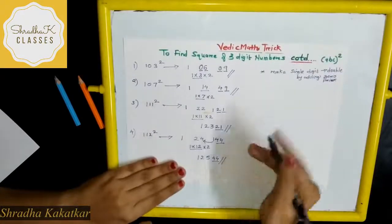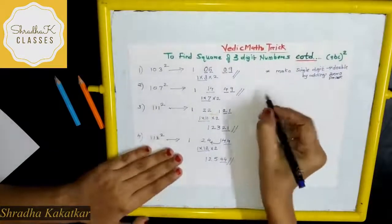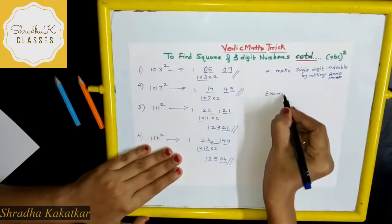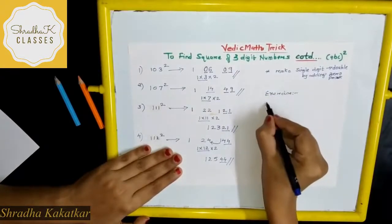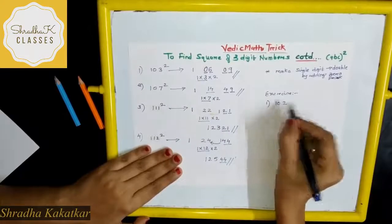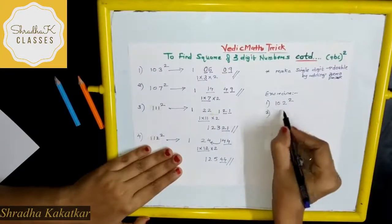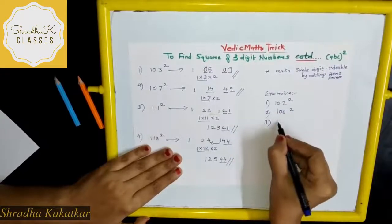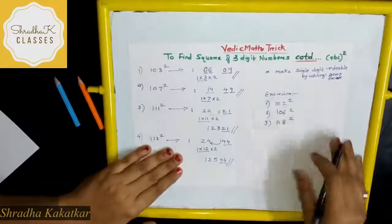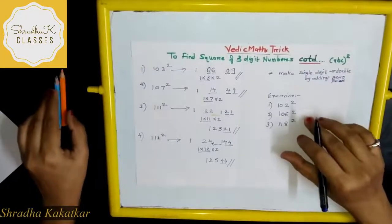Now it's exercise time. Try solving these problems: try finding 102 square, 106 square, and 118 square. Try solving these three.